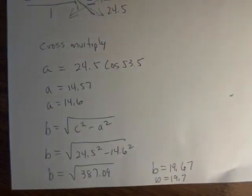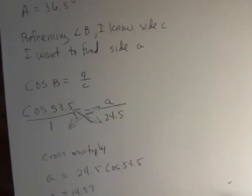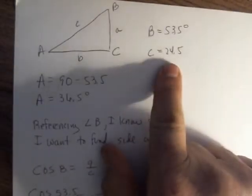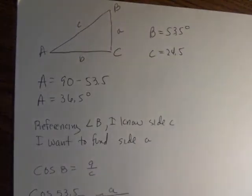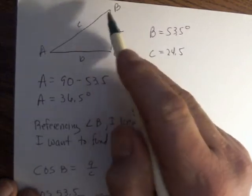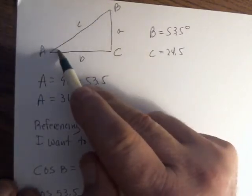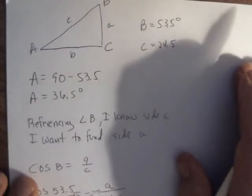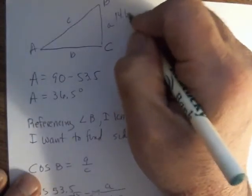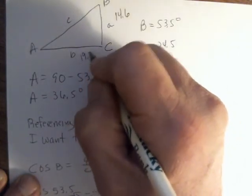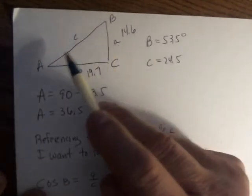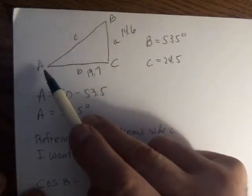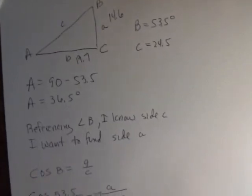All right. And the other thing, you can always do if you are wanting to see if your answers are correct. Always remember that C should be your longest side. And that's 24.5. Since this angle B is larger than this angle A, then this side B should be bigger than side A. And it is, because we got A was 14.6, B was 19.7. And so, opposite side B is opposite the bigger angle between A and B. So, these are all things that you can do to kind of check yourself.